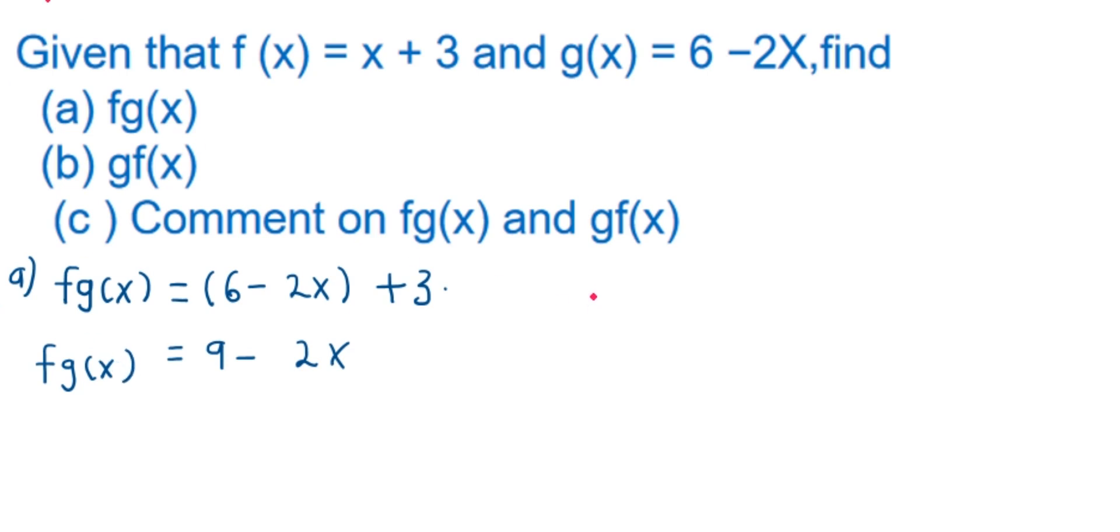Now, let us find part B. They want us to obtain g of f of x. And this is equal to, we said that in the function of g, where there is x, we are going to substitute f of x. So this is 6 minus 2, we realize that x is found here. So we are going to substitute f of x, which is x plus 3.